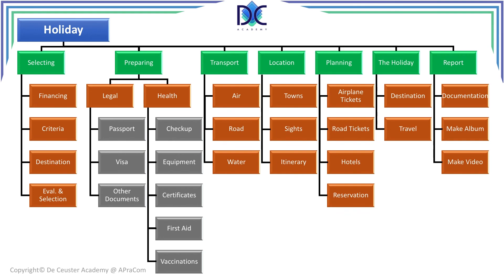Once you make this for one holiday, you can use it for all the others. If you travel a lot, you create knowledge and may have a checklist that works like a WBS. You can try making your WBS with the team to find out how you want to structure it. You can make a template, review it, and adjust it to specific needs and problems encountered. Once finished, we can move to the next step.